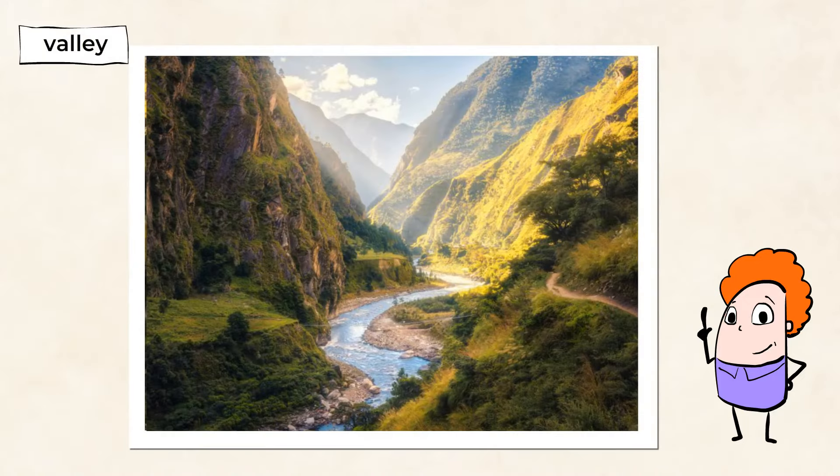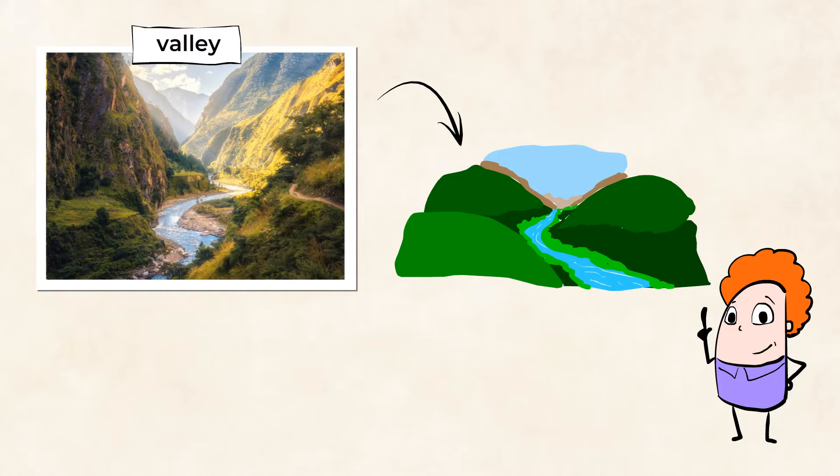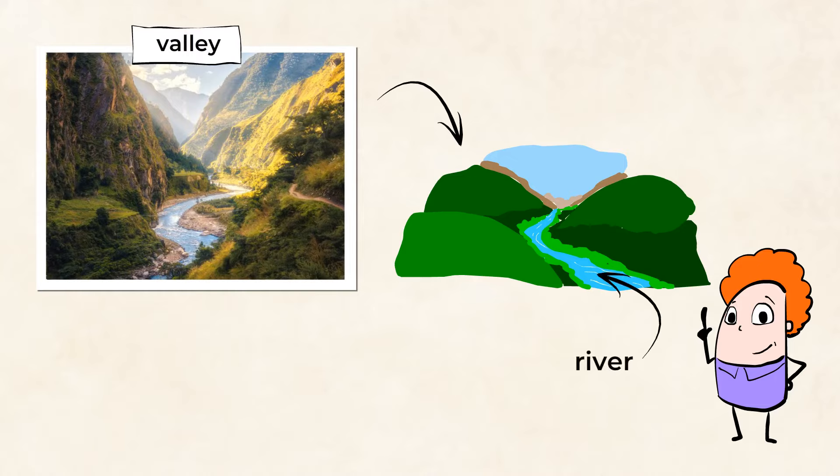And if there are so many high mountains, then there must be tons of low valleys. A valley is a low area between mountains created by the flowing water of a river.